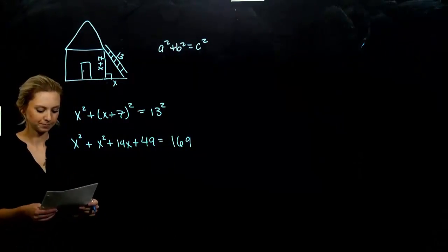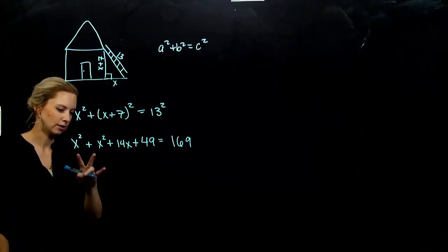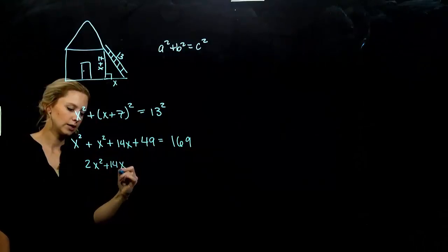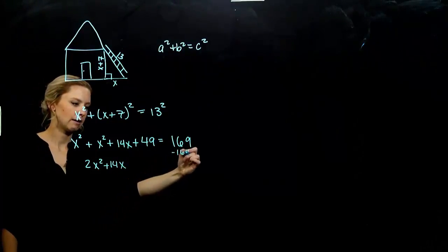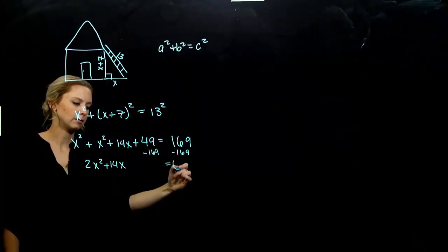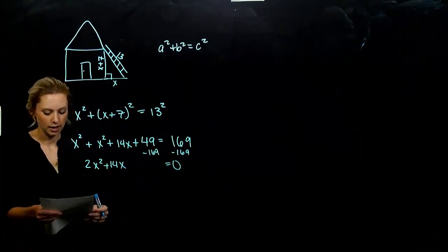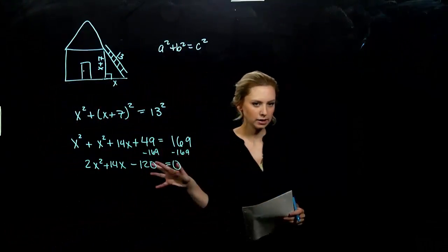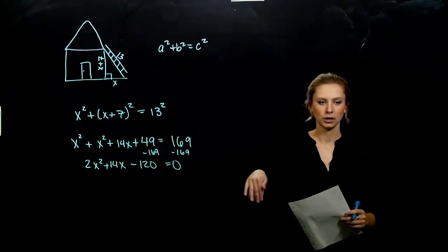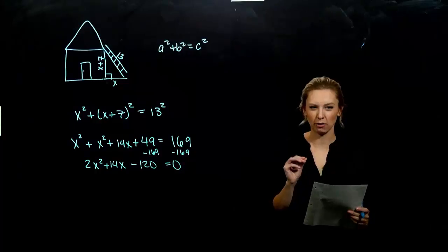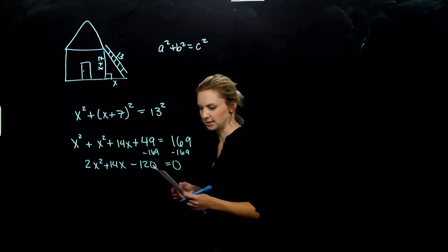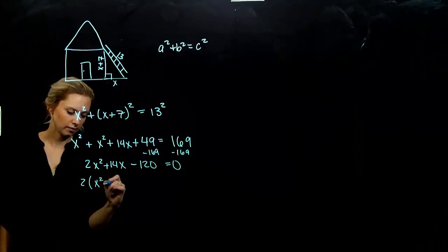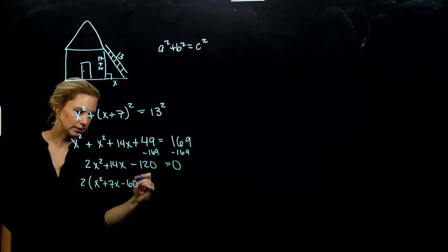I'm going to combine our like terms and eventually get everything on one side. I have two factors of x² and 14x. If I subtract 169 from both sides, it's going to be equal to zero, and the constant is -120. Now that we've got a plain polynomial, first question: is there anything that I can factor out of all those terms to make the numbers easier? Two, because they're all even. We're looking at x² + 7x - 60 = 0.